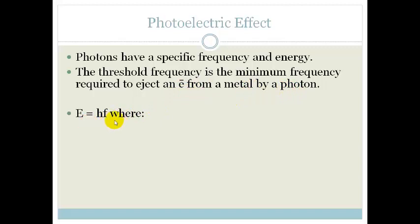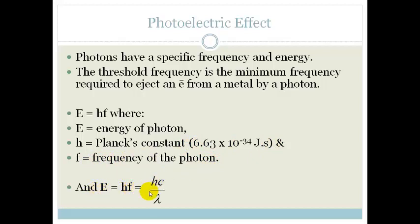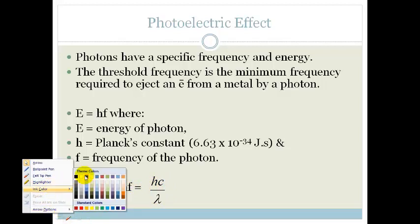There was a dude called Planck and he came up with this equation where he said E is equal to hf, where E is the energy of the photon, h is Planck's constant which is 6.63 times 10 to the minus 34 joules per second, and f is the frequency of the photon. So E equals hf, which can be rewritten as hc over lambda. Let me just show you how we get that in case you think I'm crazy.